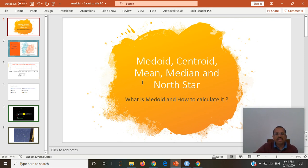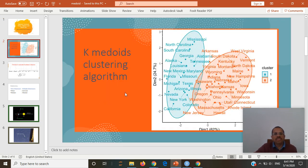Hello, today we will see what is medoid, what is centroid, and how it is related to mean, median, and North Star. Medoid is used in k-medoid clustering algorithm of machine learning. In this case, we divide our observations into multiple clusters depending on the medoids. We will see what are medoids, how to calculate them, and how they are related with mean and median.